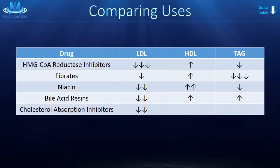This last slide helps you understand uses for the previously described drugs. For example, if a patient really needs help with their LDL, an HMG-CoA reductase inhibitor — a statin — would probably be your best bet. If you're trying to increase someone's HDL, niacin is the best. Go ahead and pause the video if you need to study this further.